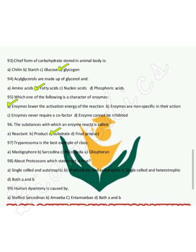Trypanosoma is the best example of the class Flagellata, also known as Mastigophora. Protists have no autotrophic members in this context — they are heterotrophic and can be unicellular or multicellular.